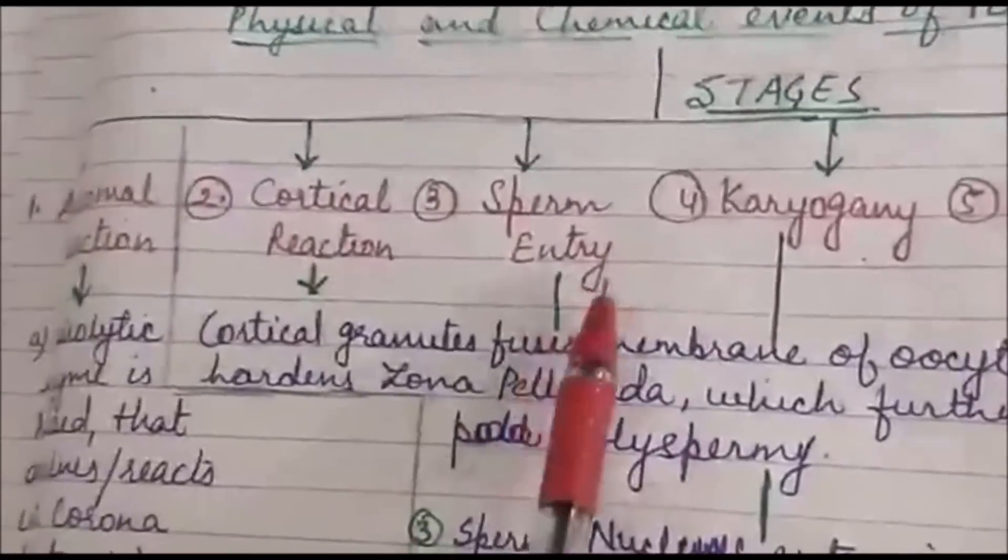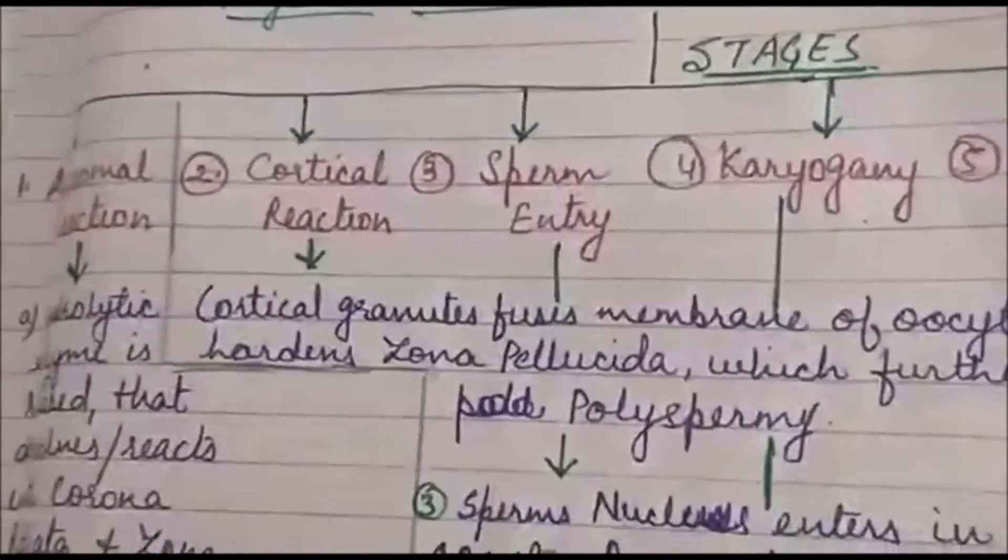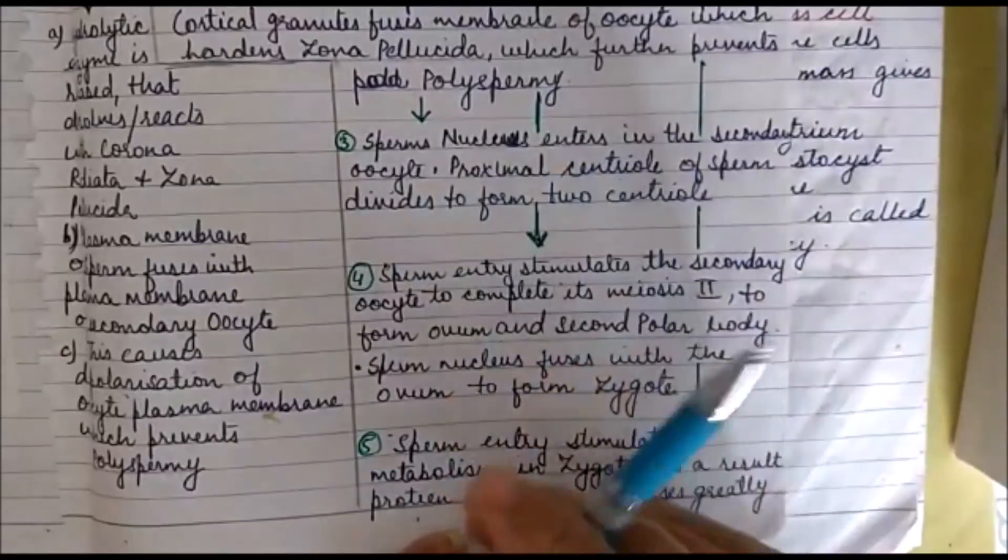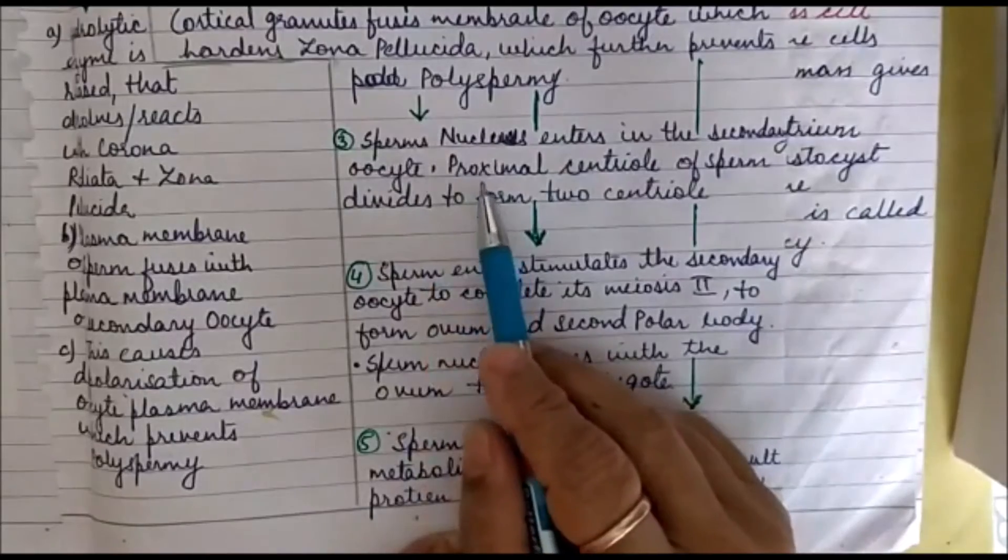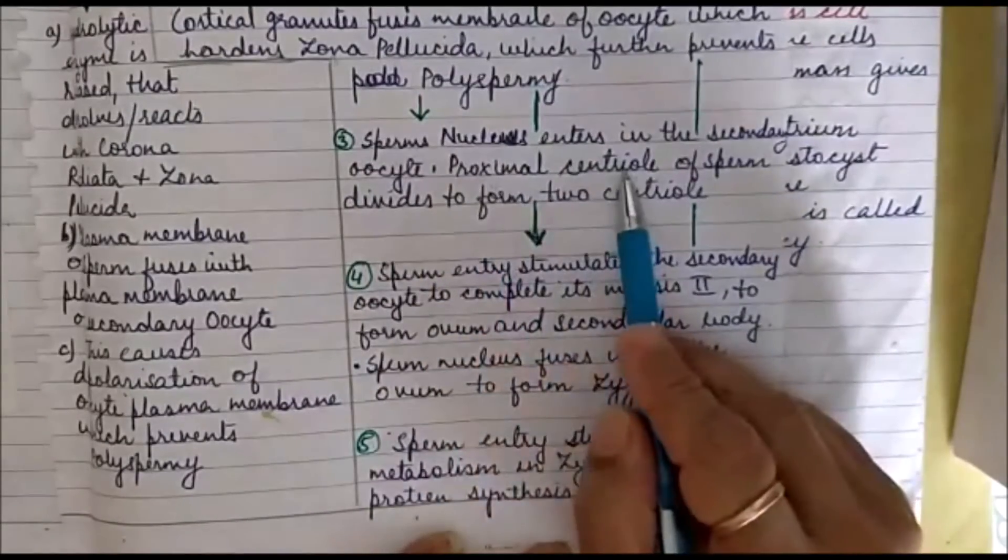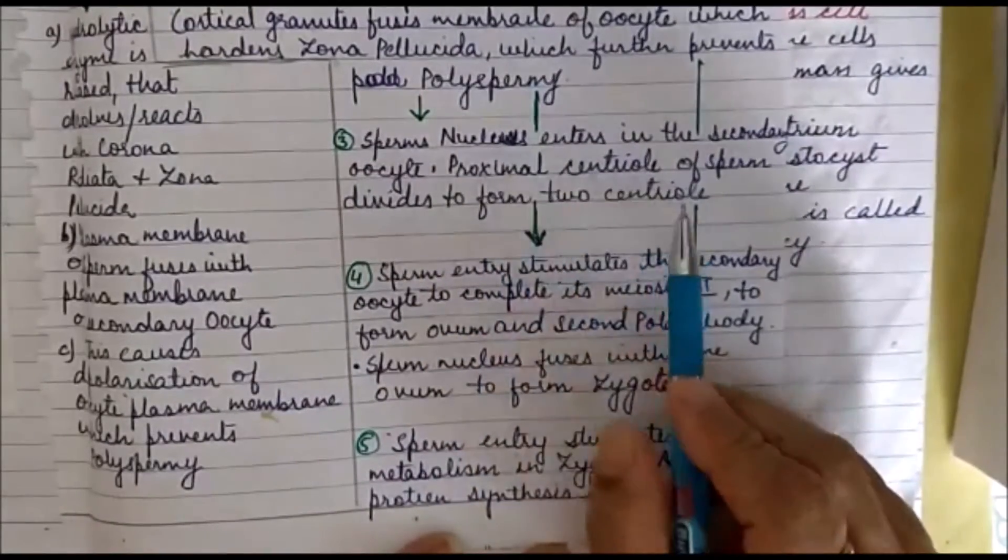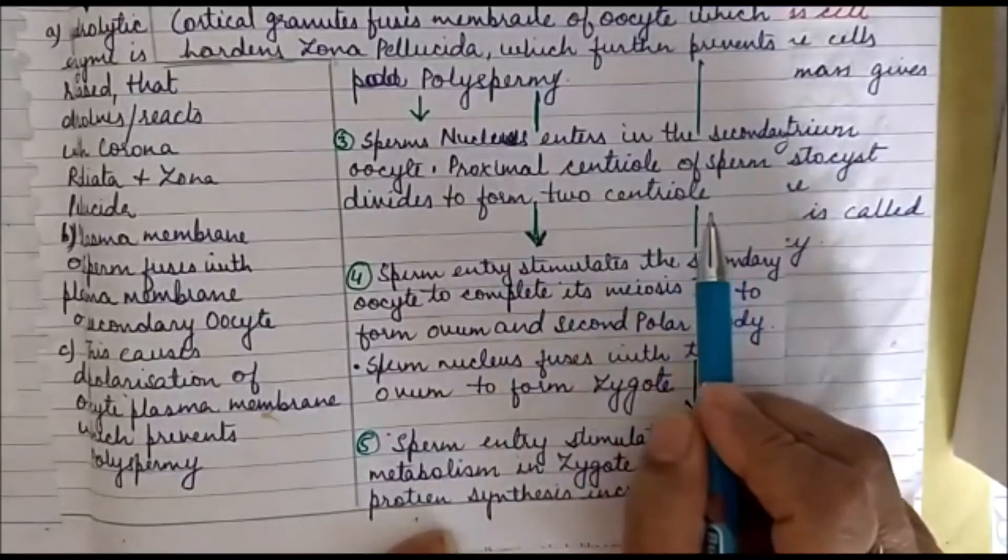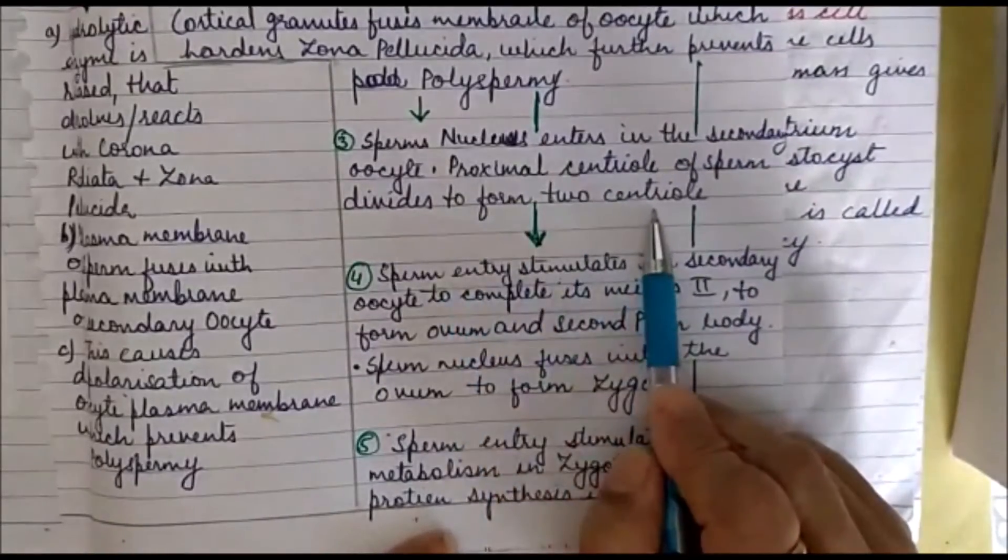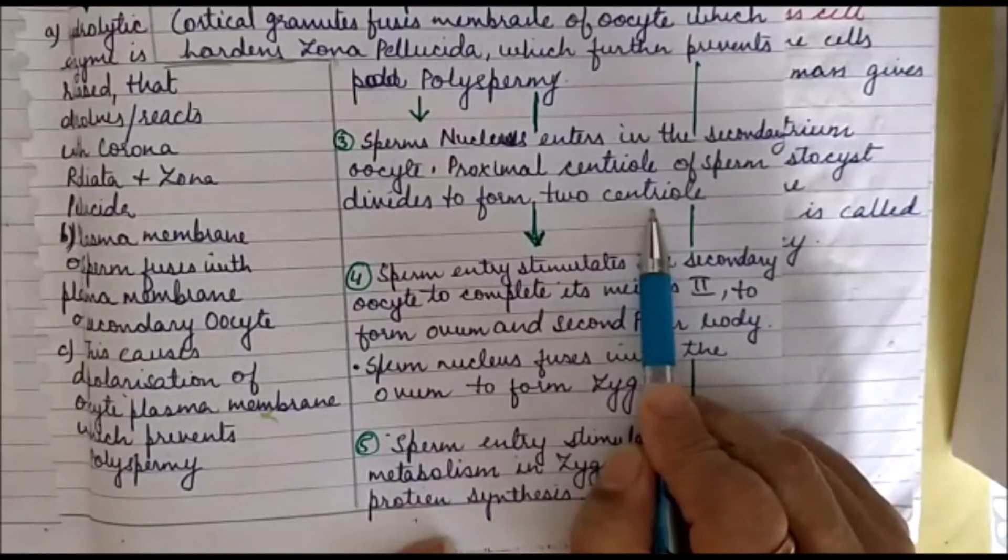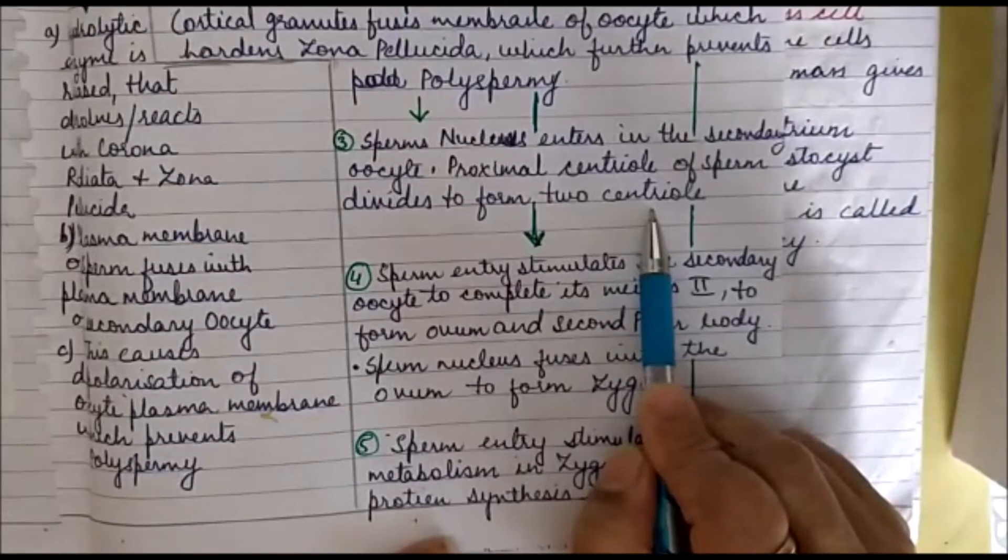The third reaction is sperm entry. After this, the sperm nucleus enters in the secondary oocyte. I already have told you that sperm has got two centrioles: one is the proximal centriole and the other is the distal centriole. The proximal centriole of the sperm divides to form two centrioles and that helps in the process of fertilization.